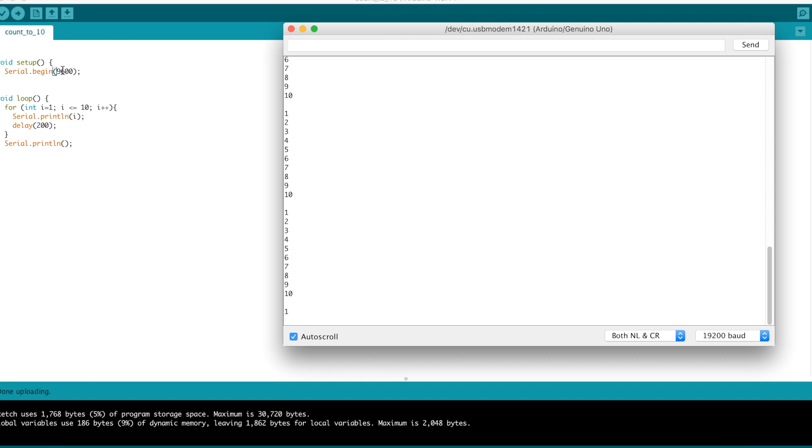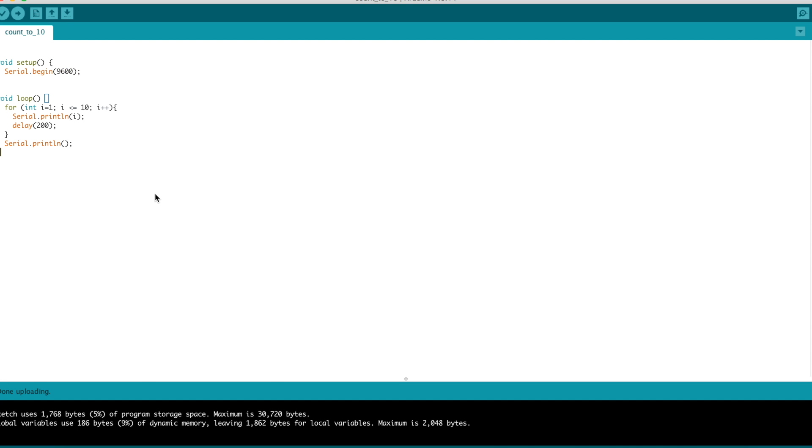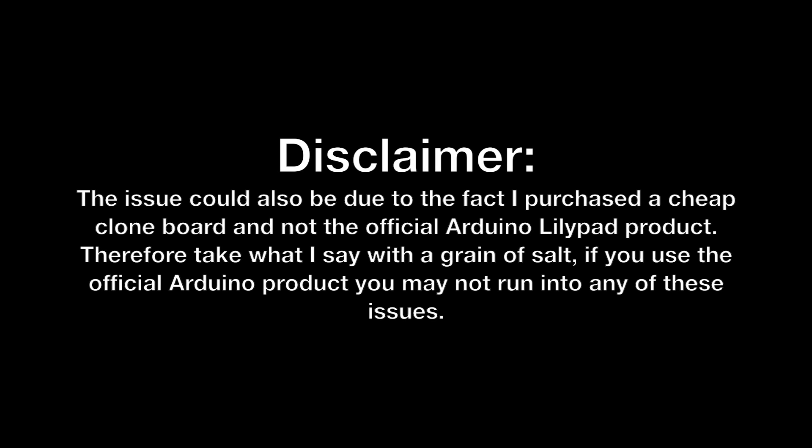I instead have to change the baud rate to 19200. I believe the issue is that the lily pad uses an 8 MHz oscillator, while the Arduino Uno, which is used to connect it to the computer, uses a 16 MHz oscillator. And because of this, I can't reliably pair the two modules, even when I offset the baud rate by a factor of 2.